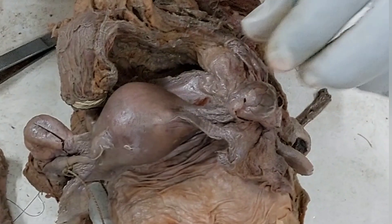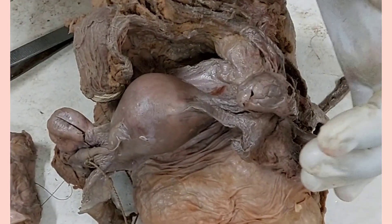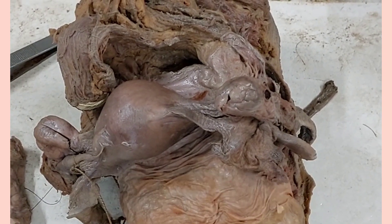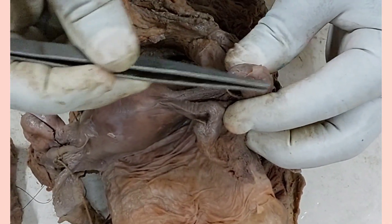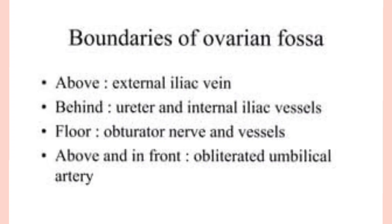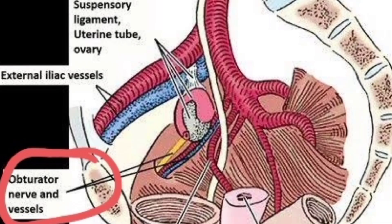The ovary is situated in the ovarian fossa on the lateral pelvic wall. The boundaries of the ovarian fossa are: above and in front is the obliterated umbilical artery; above is the external iliac vein; behind is the ureter and the internal iliac vessels. The lateral surface of the ovary is related to the ovarian fossa, and on the floor of the ovarian fossa lies the obturator nerve.